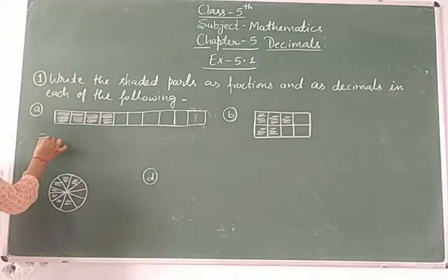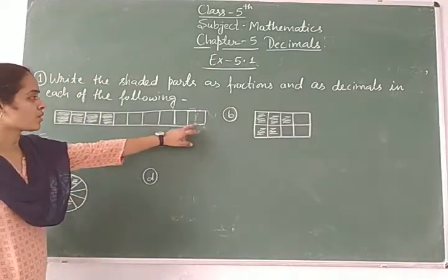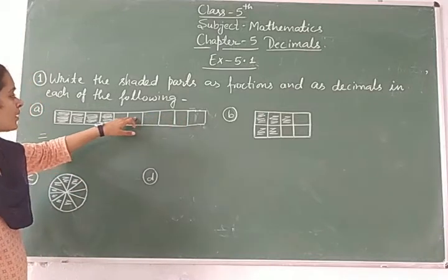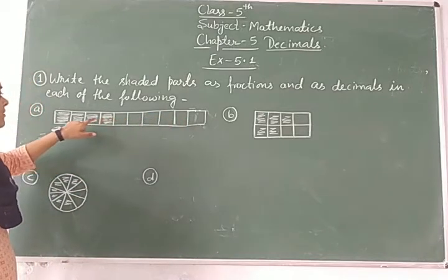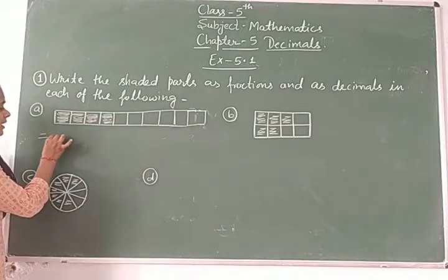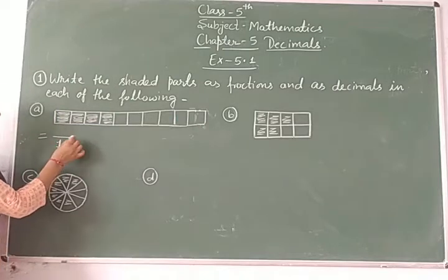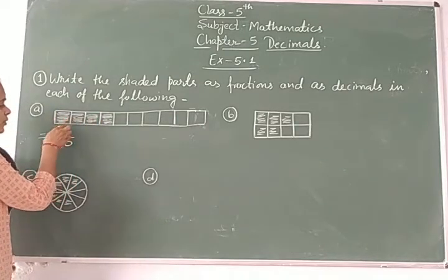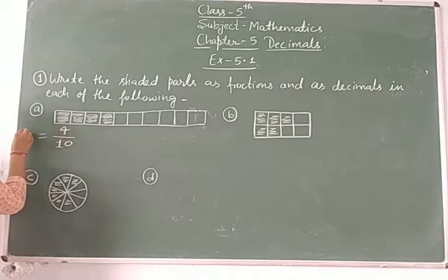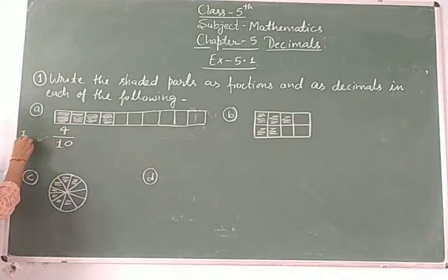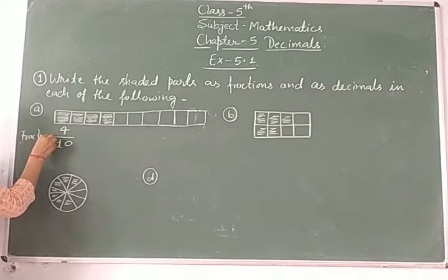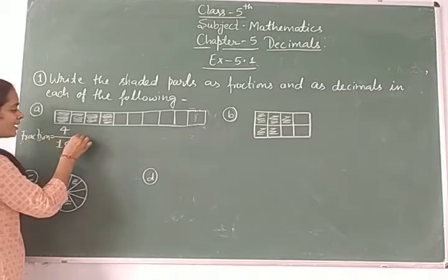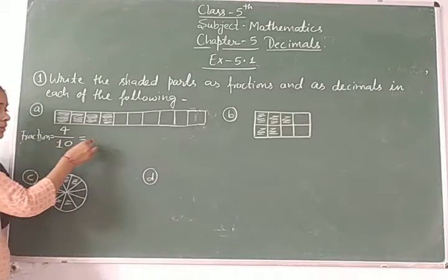First of all, count the total boxes: one through ten — total ten parts. And how many colored parts? One, two, three, four — four colored parts. So the fraction is four upon ten, and the decimal is zero point four — 0.4.